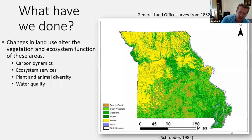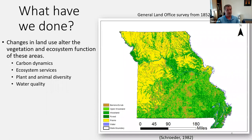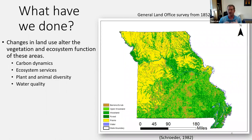A lot of you have probably seen this image multiple times. Many Missouri Prairie Foundation webinars use this GIS layer to convey what has happened to our prairies. In the yellow on the right is the general land office survey from 1852, compiled by Walter Schroeder in 1982. All of that yellow represents historic prairie that's likely under-mapped in the state. We have now lost over 99% of that yellow layer — the prairie here in the state of Missouri.